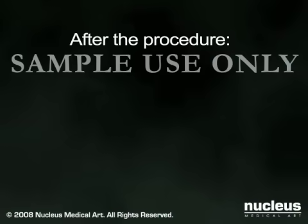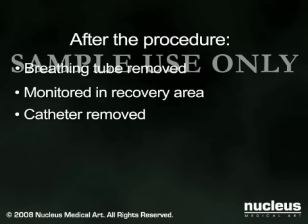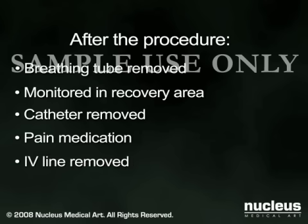The keyhole incisions are closed with just a few sutures or staples and then covered with bandages. After your surgery, your breathing tube will be removed and you will be monitored in the recovery area. Your catheter will be removed shortly thereafter and you will be given pain medication as needed. Your intravenous line will come out when you can drink liquids. Most patients are released within a few hours of the procedure.